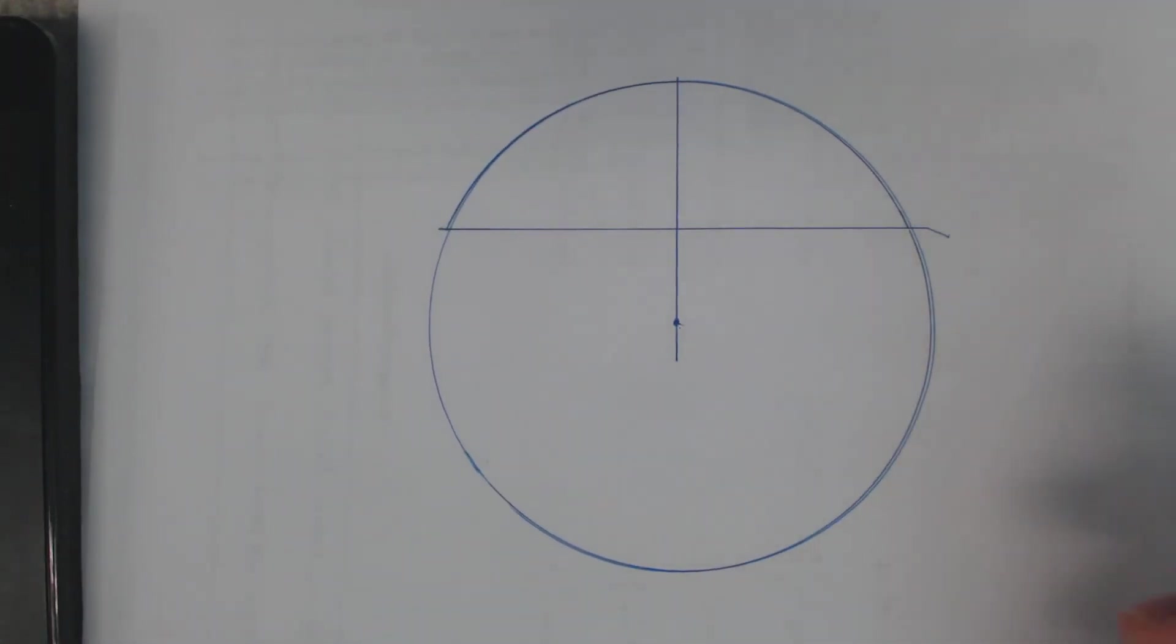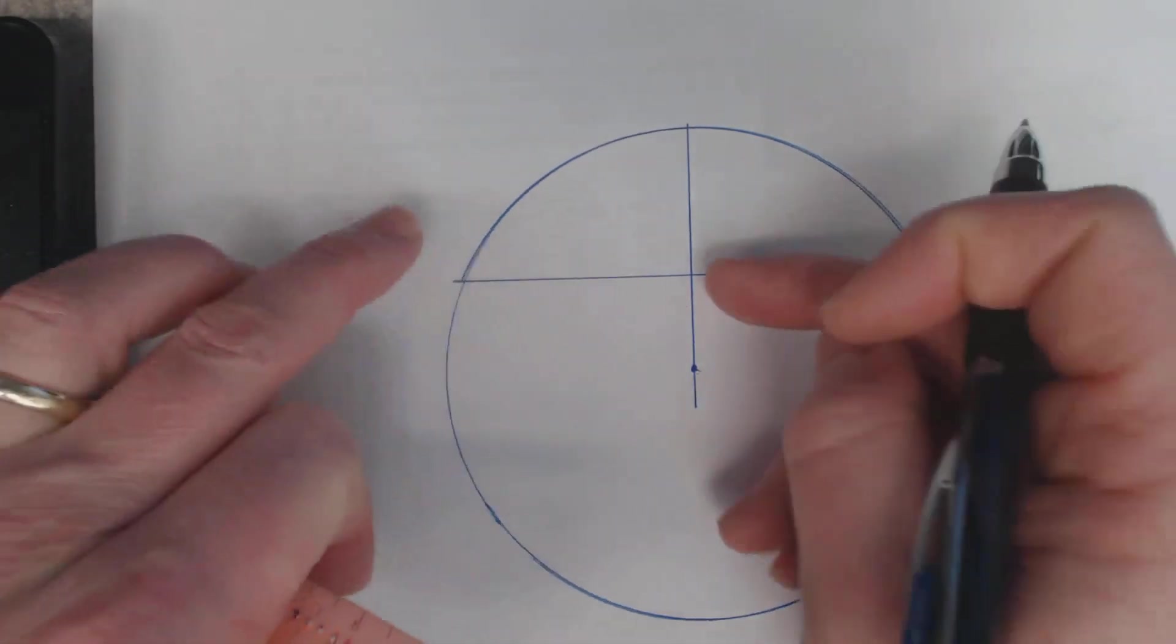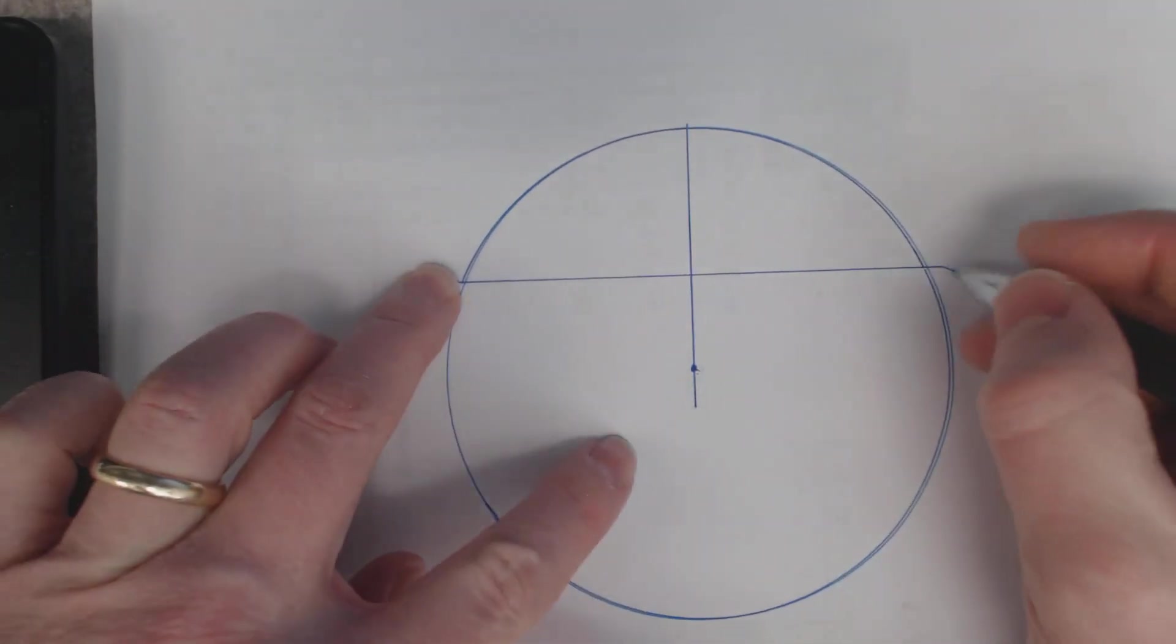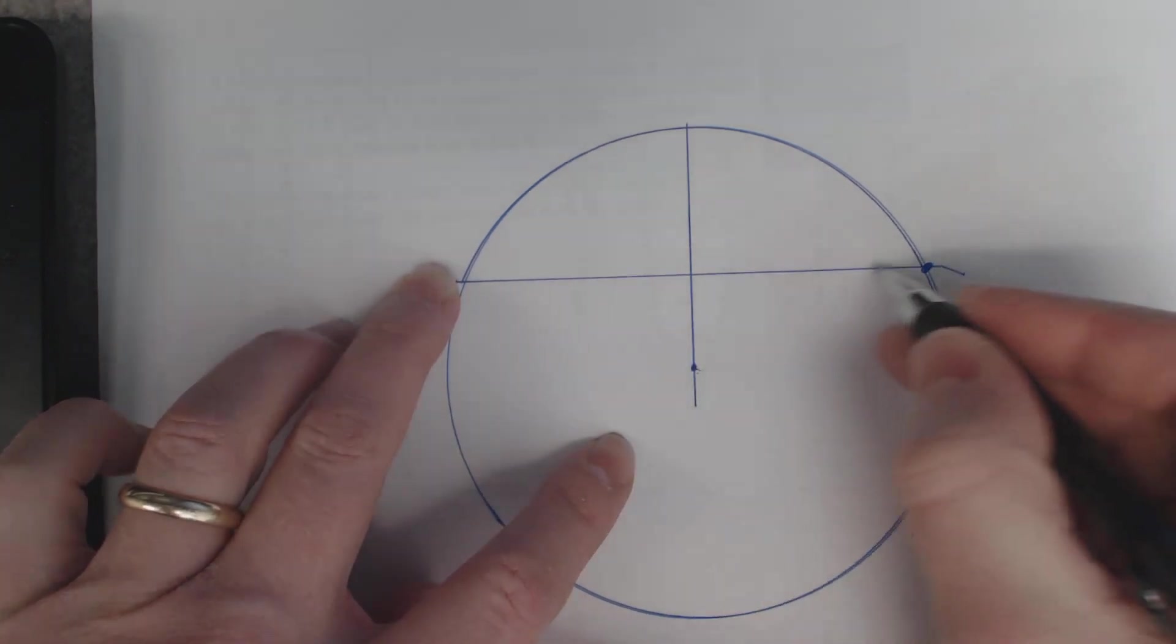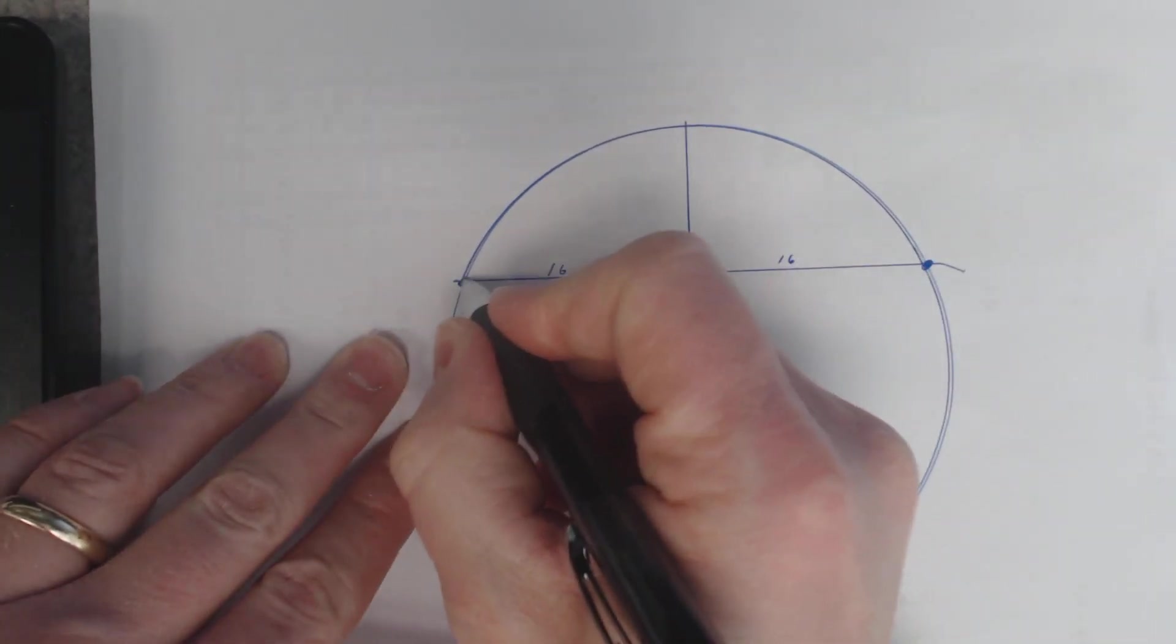And if it's 32 feet wide, that means this distance and this distance is the same. So this over here would be 16 feet, right? 16 feet this way and 16 feet this way.